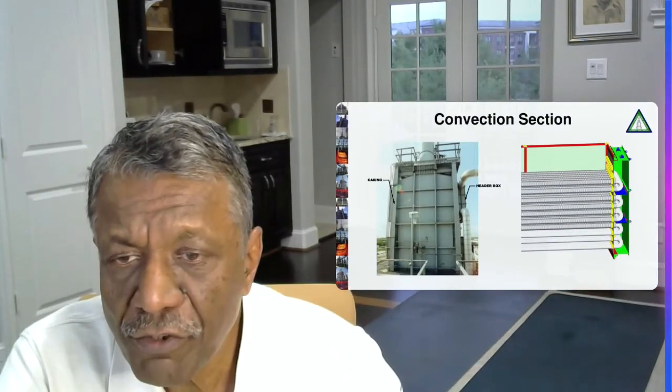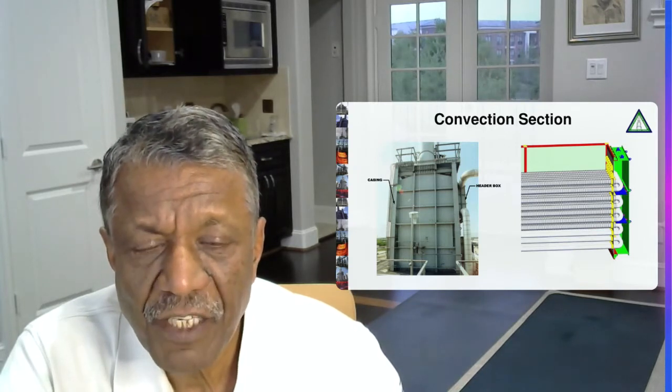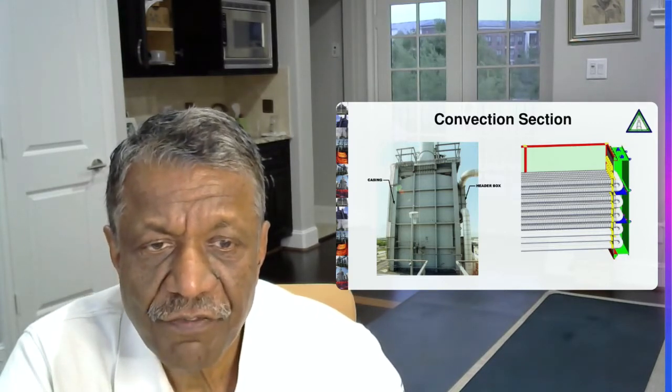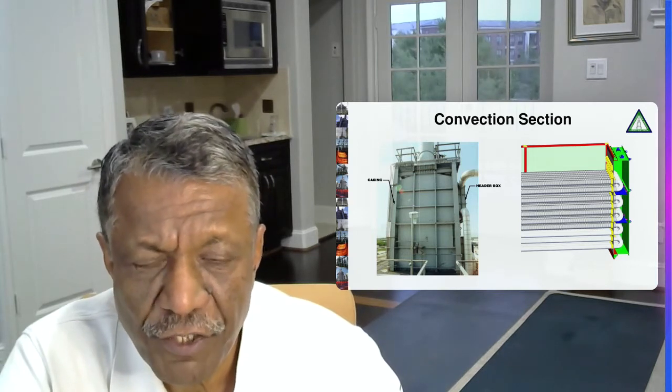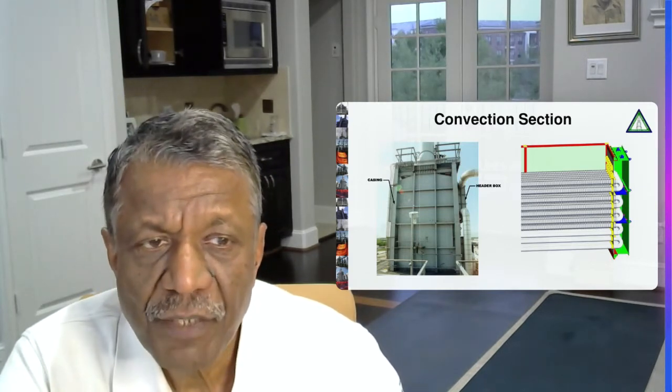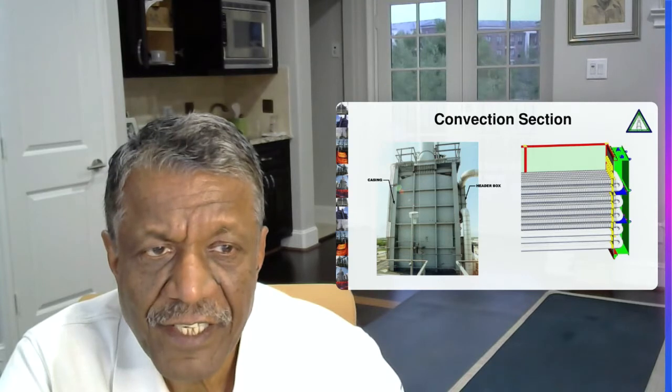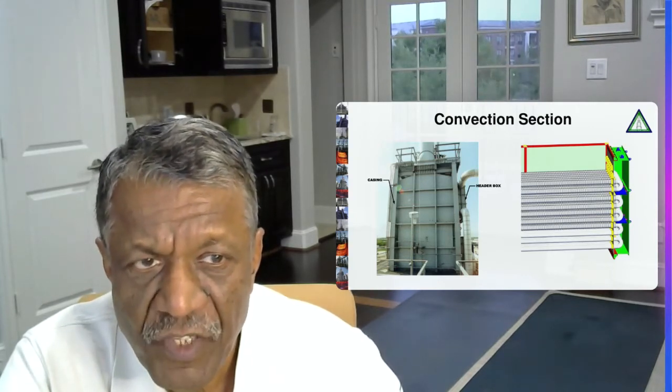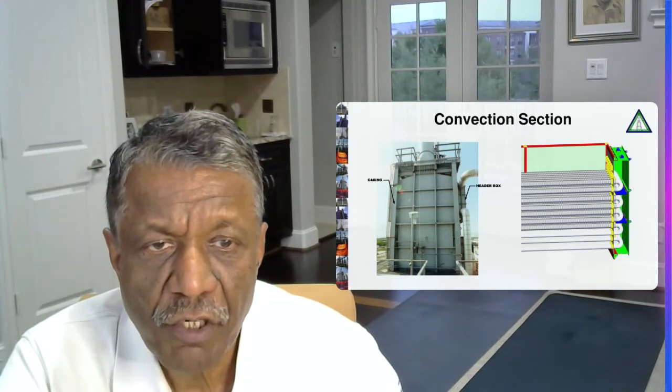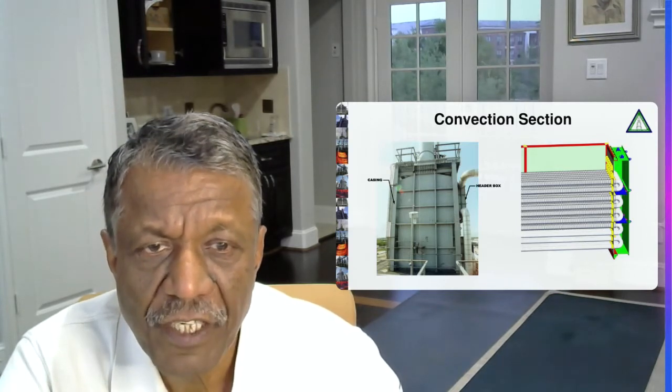Convection section is the second most important component in the fire heater. Here the heat is recovered from the flue gases by means of flue gas velocity. So typically we will have three rows of bare tubes which are known as shield tubes or shock tubes, followed by fin or studded tubes where the heat is recovered. The tubes are mostly arranged in triangular pitch and we have the return bends housed in a header box so that the flue gases don't flow through the return bends. The header boxes are on both sides, so there is a cross flow. The flue gases are flowing from bottom to top and the fluid is flowing from top to bottom in a counter current manner, and that's how the heat is transferred.